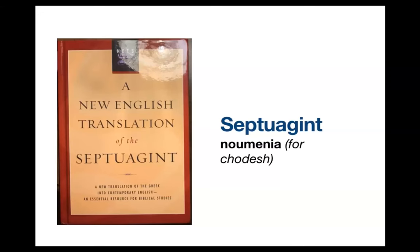The Septuagint is extremely important for our study. Most of the time when you read your New Testament and see 'for it is written,' followed by an Old Testament quote, approximately 80% of the time that quote is directly from the Greek Septuagint. This explains why sometimes a New Testament quote doesn't read exactly the same as the Old Testament verse — because the New Testament author was quoting from the Greek Old Testament. There are several places where the Septuagint translates 'chodesh' from Hebrew into Greek with the word 'pneumania.' That's the Greek translation of chodesh — just as English translates it as 'month' or 'moon,' Greek uses 'mene' or 'pneumania.'